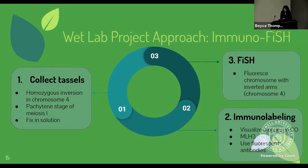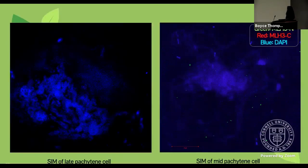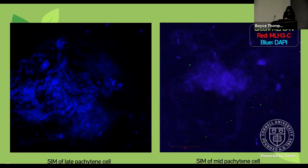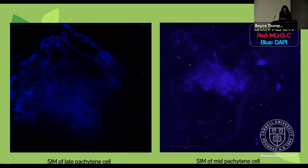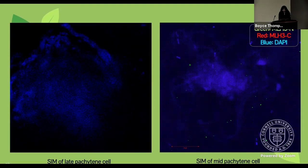The last step — which we haven't done yet — is our future plan to perform FISH, fluorescing the chromosome with the inverted arm, which would be chromosome four. Here are pictures collected with the super resolution imaging microscope. On the left is a GIF of a Z-stack, where the microscope collects pictures as it moves through the layers of the meiocyte. We brightened these images during processing with ImageJ. The blue is the chromatin, and you can see faint green dots and red dots representing foci, which show where the proteins are on the chromatin.